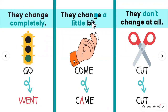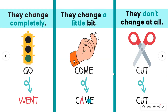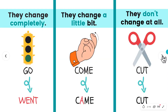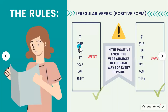Now we have 'they change a little bit' — cambian un poquito. Por ejemplo, el verbo 'come', venir, y cambia solo aquí: 'came'. No cambia al final, cambia en el medio — la O la cambiamos por A. And I also have 'cut', cortar, que cambia a 'cut'. Can you see it? It didn't change, actually — ni siquiera cambió, se mantuvo igual. So, that's what happens with irregular verbs, and that's why we have a list of irregular verbs.